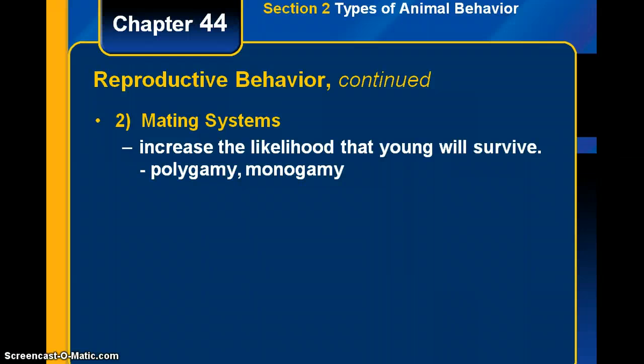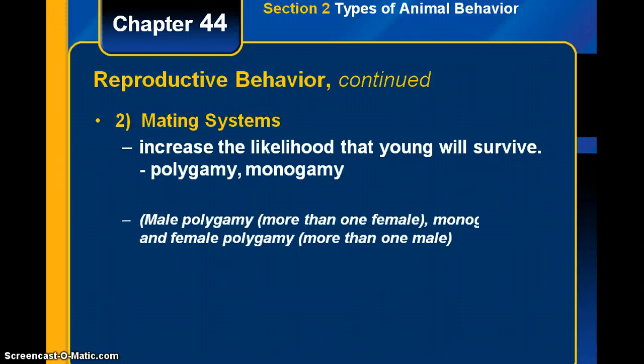The second type of reproductive behavior has to do with mating systems. The mating system chosen increases the likelihood that the young will survive. Some species are polygamous — they mate with more than one female per male. Monogamy means mating for life with only one partner. There's also female polygamy, with more than one male.